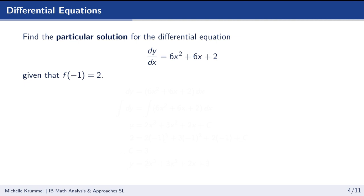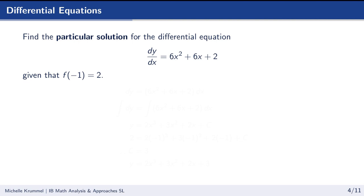For our next example, find the particular solution for the differential equation dy/dx equals 6x squared plus 6x plus 2, given that f of 1 equals negative 2. We'll find a general solution first, then substitute the given information to solve for c. The technique we use today is called separation of variables. We multiply both sides by dx, separating dy on the left and 6x squared plus 6x plus 2 dx on the right.